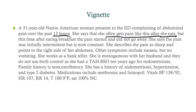She describes the pain as sharp and points to the right side of her abdomen. Other symptoms include nausea but no vomiting. She's monogamous with her husband and did not use birth control as she had a total abdominal hysterectomy with bilateral salpingo-oophorectomy — basically all her female parts were taken out 10 years ago for endometriosis. Her history includes endometriosis, hypertension, and type 2 diabetes. Medications include metformin and lisinopril.